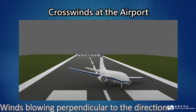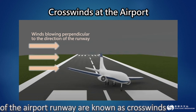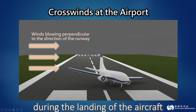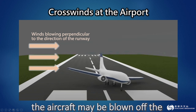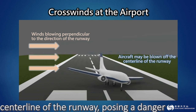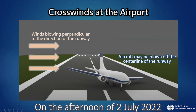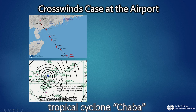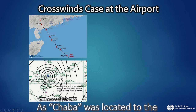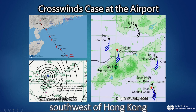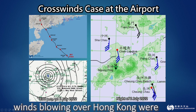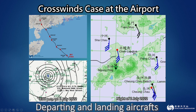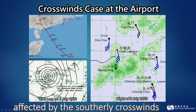Winds blowing perpendicular to the direction of the airport runway are known as crosswinds. If the crosswinds are too strong during the landing of the aircraft, the aircraft may be blown off the centerline of the runway, posing a danger. On the afternoon of 2 July 2022, tropical cyclone Chiba made landfall in western Guangdong. As Chiba was located to the southwest of Hong Kong, winds blowing over Hong Kong were south to south-easterly, and departing and landing aircraft at the airport were affected by the southerly crosswinds, making them more difficult to control.